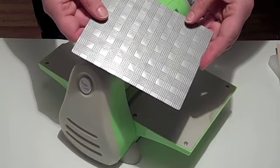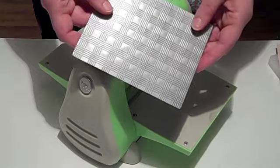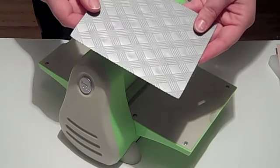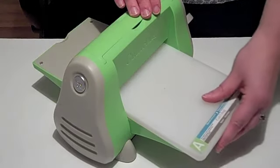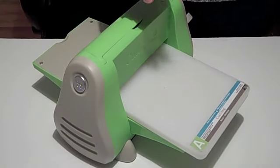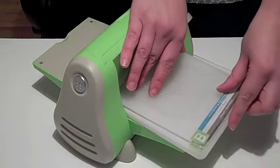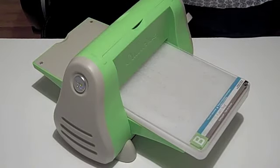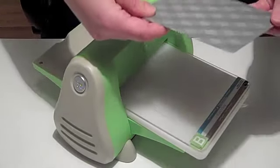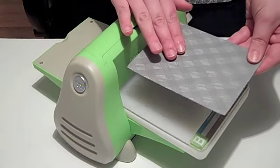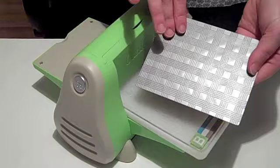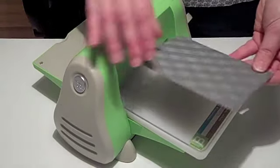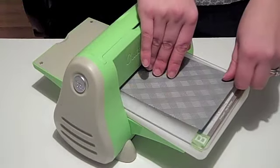I'm going to show you how to do simple single sheet impressing with the impression plates. For the cuddle bug you're going to want to start with the A plate, followed by a B plate, and put your impression plate pattern side up for the pattern you wish to use. This is our new picnic plaid, it's got two different types of plaid on it. I'm going to be using this one that's at a diagonal.